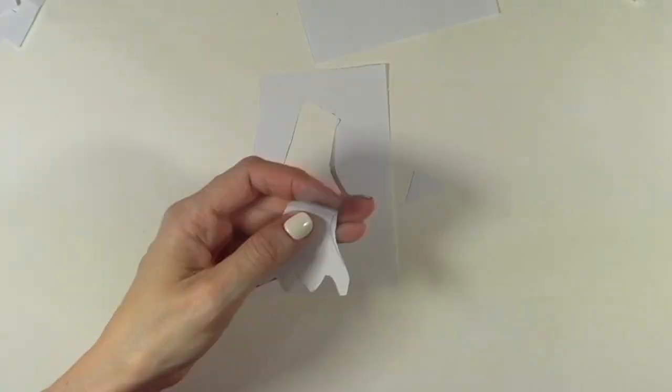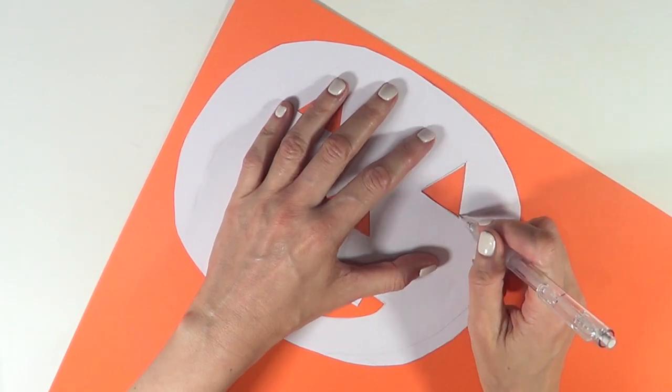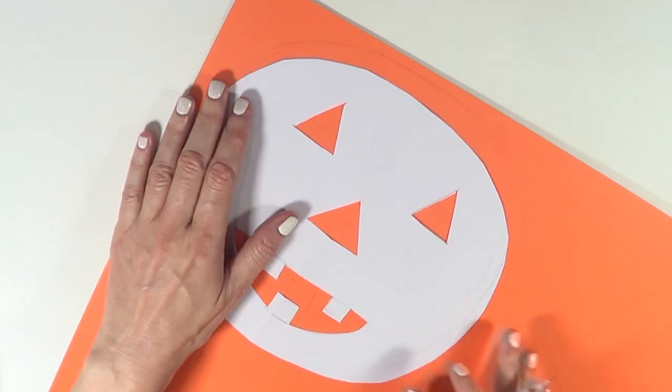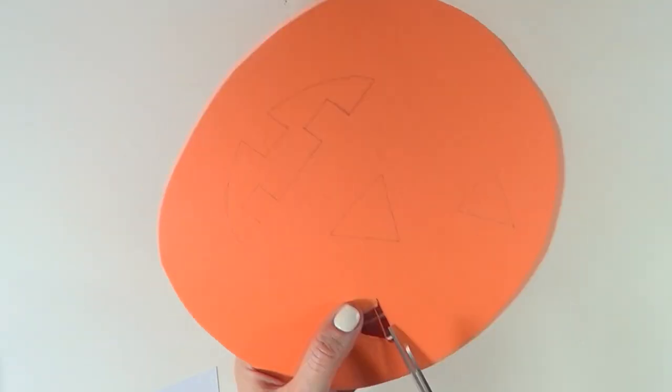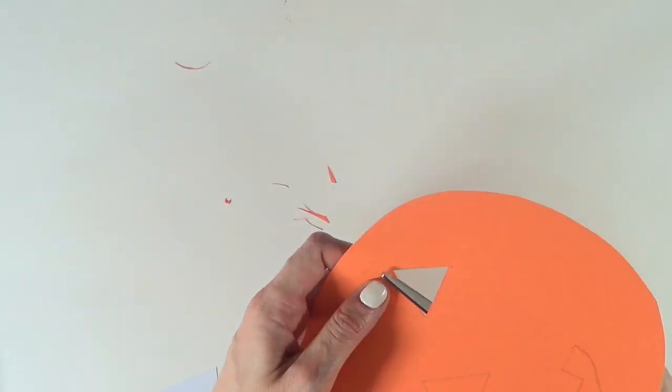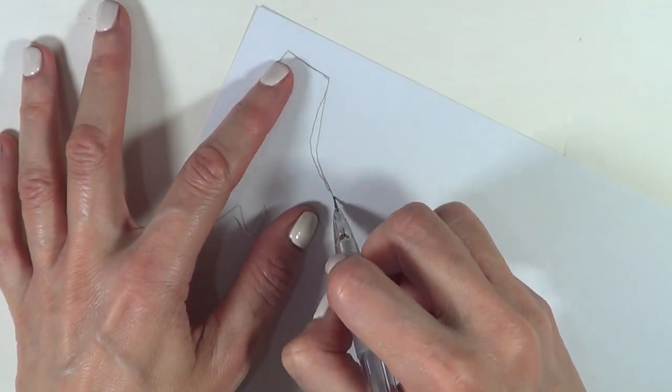Now that I have my stencils, I'm going to be using this orange cardboard and I'm going to trace the pumpkin with my pencil and I'm going to cut it. It's always a bit harder cutting through cardboard because it's hard. The same thing I'm going to be doing with the stem.